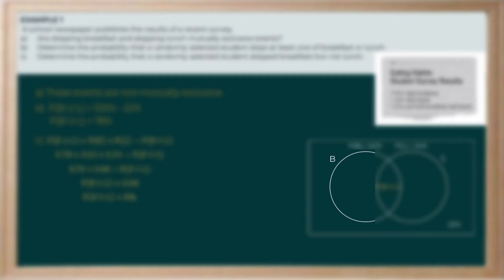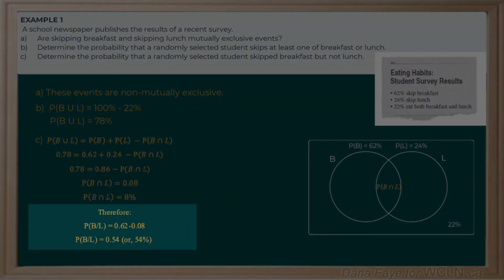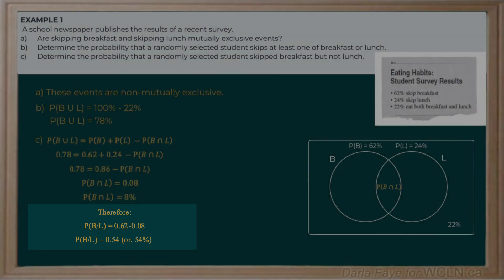That's not what the question asked us — it wanted to know the probability of a student skipping breakfast but not lunch. We represent that as P(B \ L). We know that 62% of students skip breakfast in total, and now we know that 8% skip both breakfast and lunch. Subtracting those two gives us 54% of students who skip only breakfast.